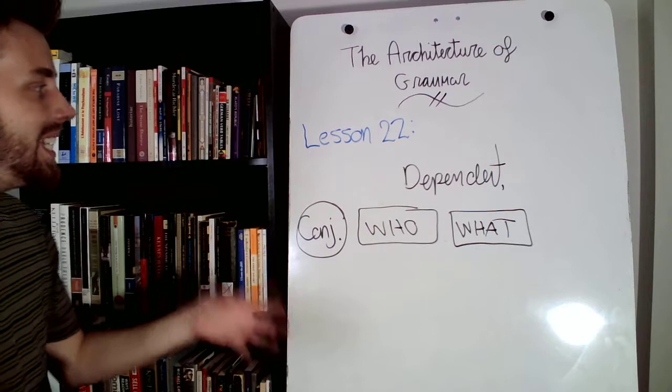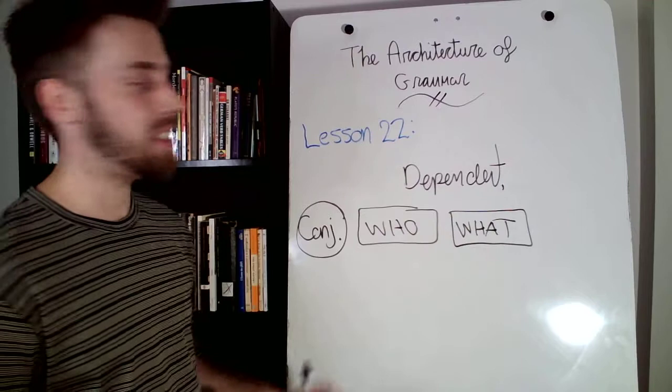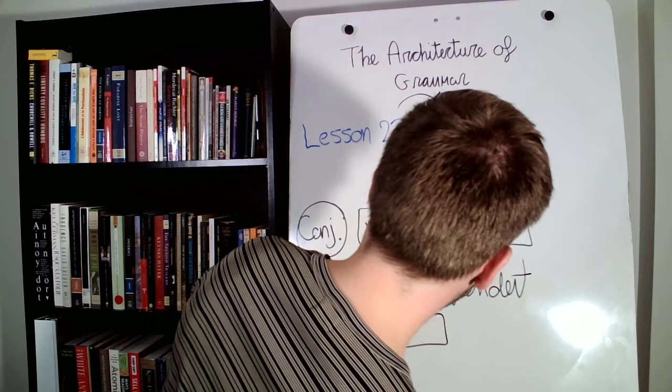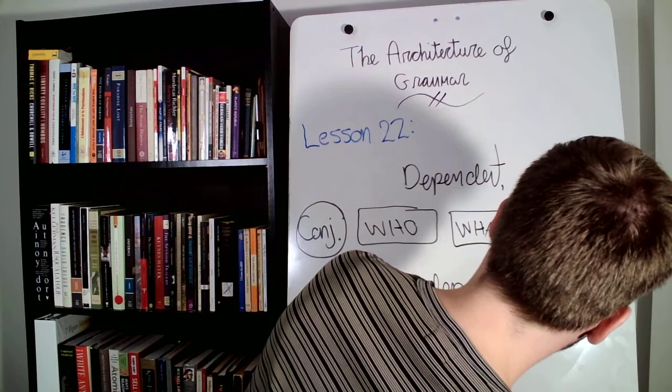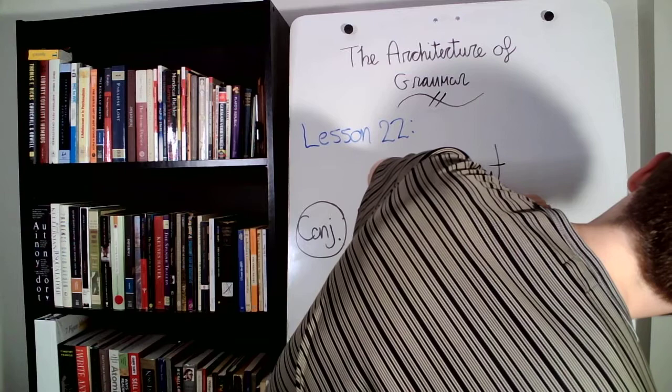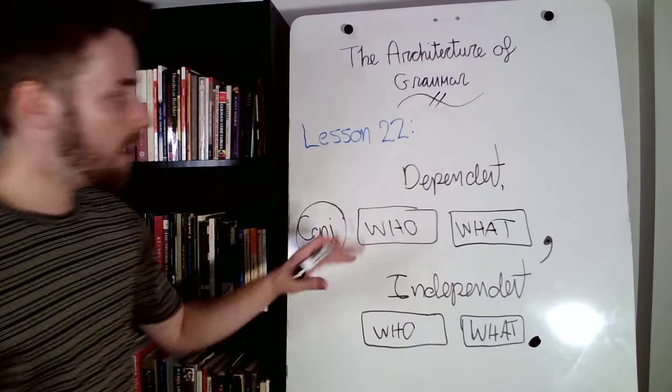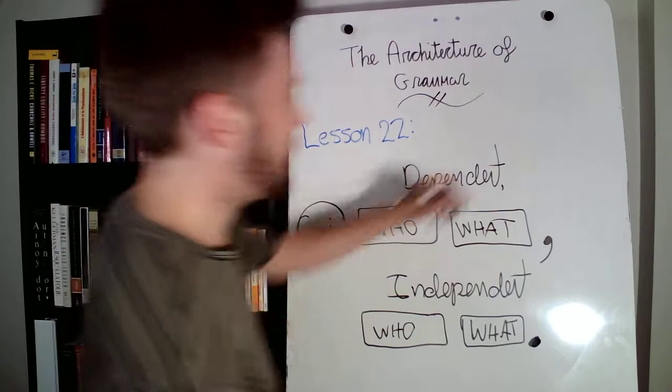As we mentioned, we absolutely need an independent clause to have a sentence. So if we have a dependent clause here, then we need to add an independent. So we need a who and a what. Now how do we trace this distinction? Well, we need a comma here between the dependent and the independent, and then we're going to need a period at the end.